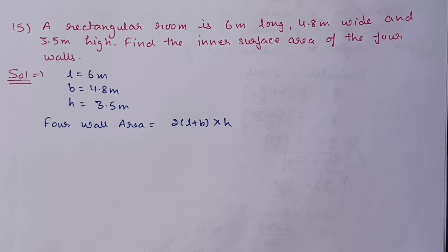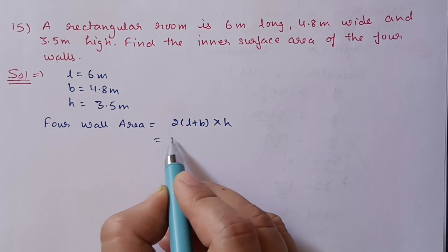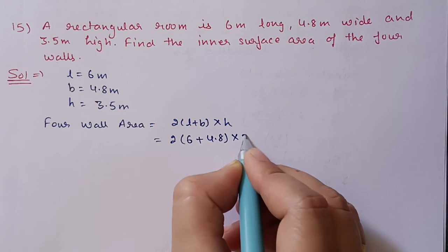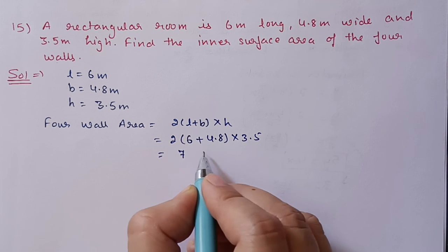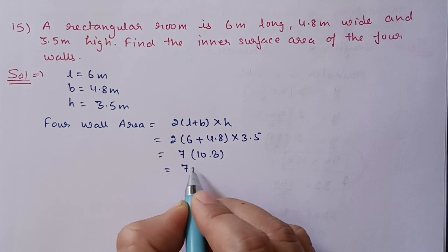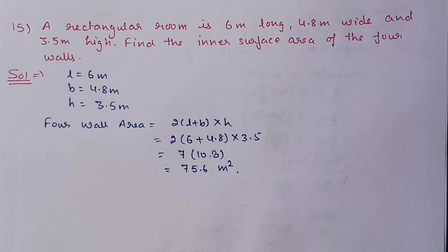Question 15: A rectangular room is 6 meters long, 4.8 meters wide and 3.5 meters high. Find the inner surface area of the 4 walls. The 4-wall area formula is 2(L + B) × height. Substituting: 2(6 + 4.8) × 3.5 = 2 × 10.8 × 3.5. 2 × 3.5 = 7, and 7 × 10.8 = 75.6 square meters.